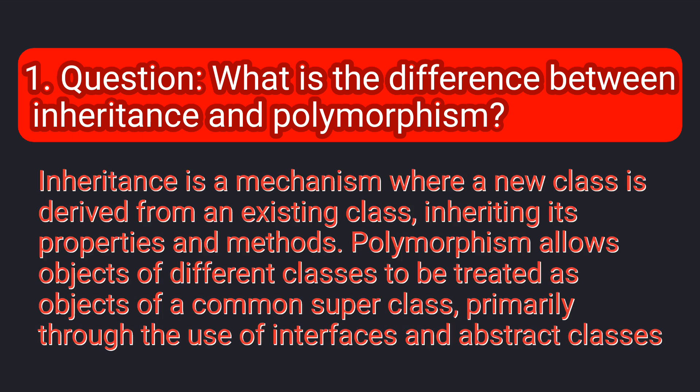Inheritance is a mechanism where a new class is derived from an existing class, inheriting its properties and methods. Polymorphism allows objects of different classes to be treated as objects of a common superclass, primarily through the use of interfaces and abstract classes.